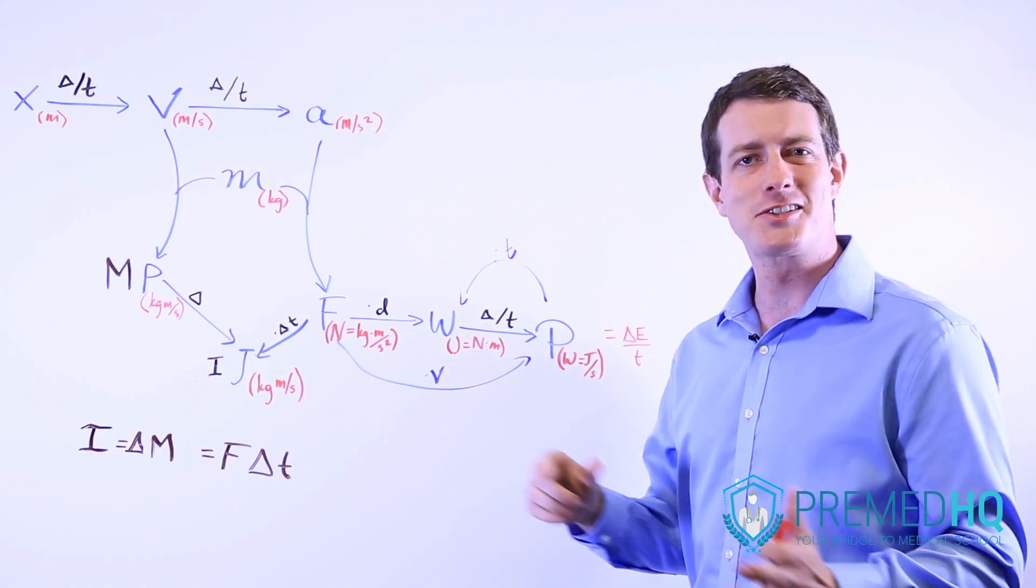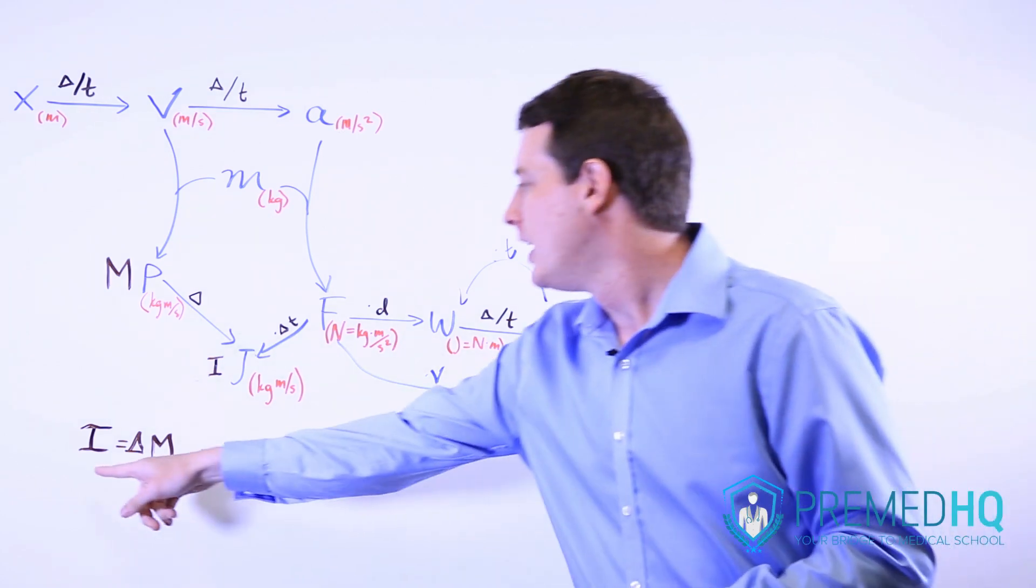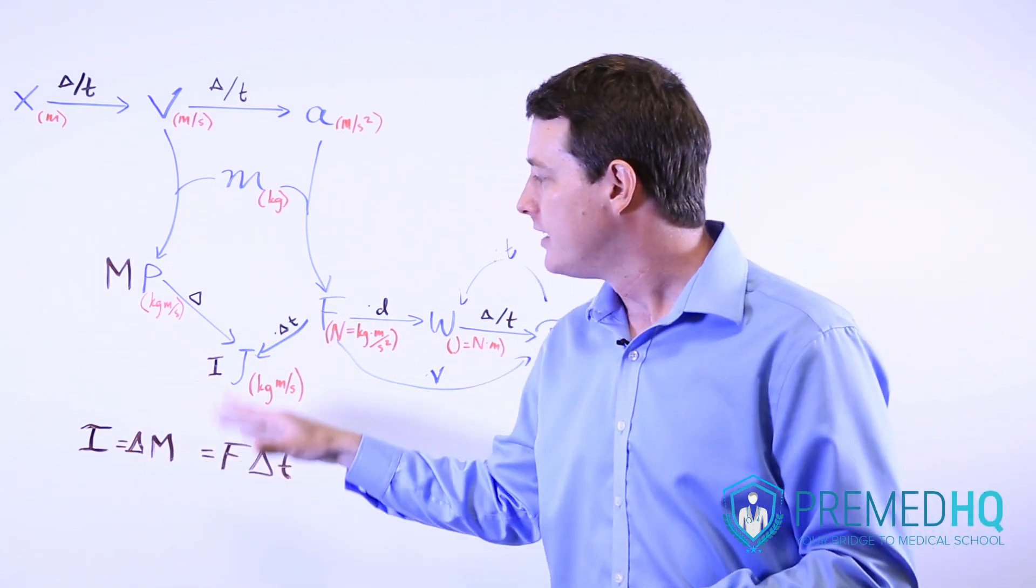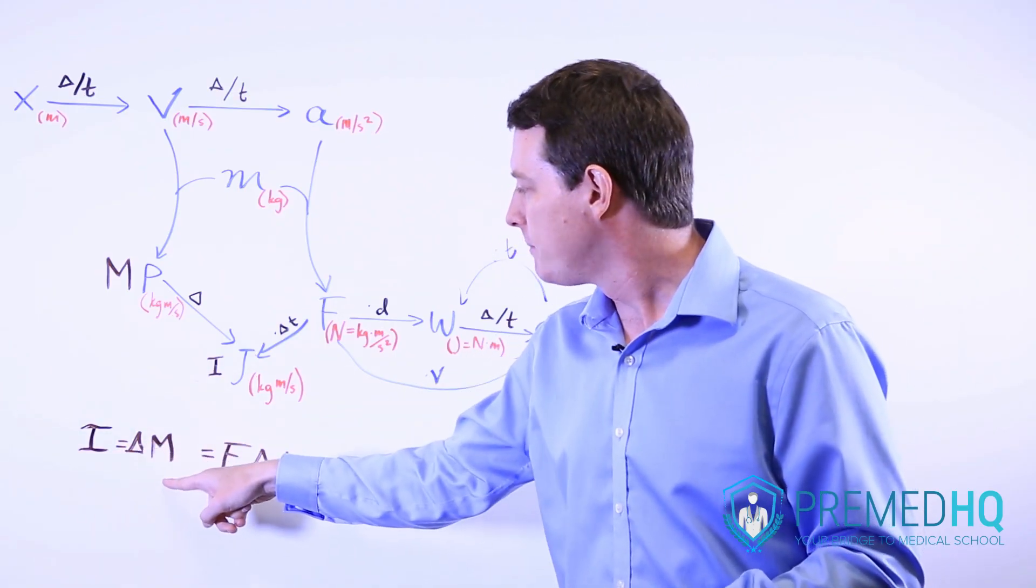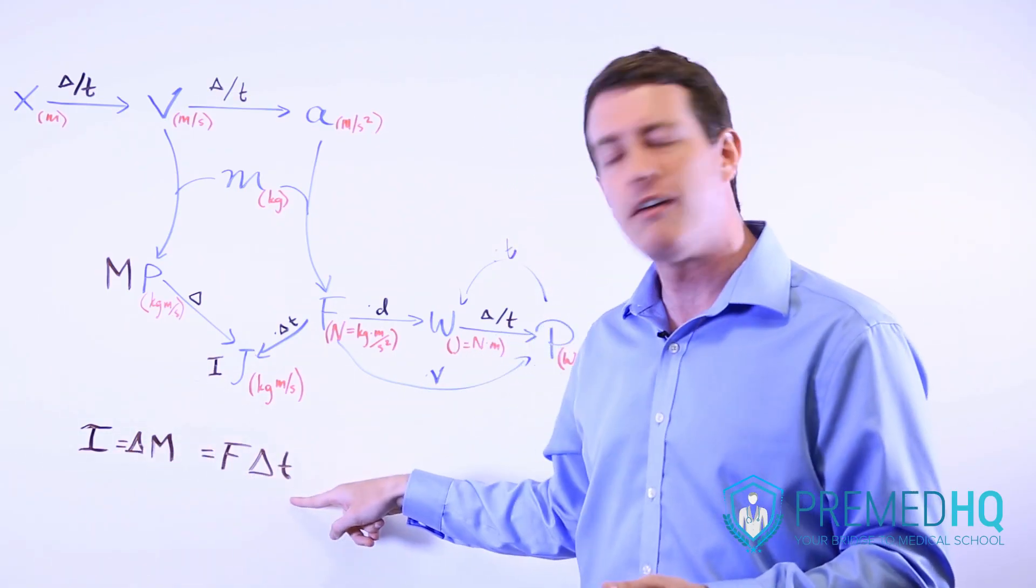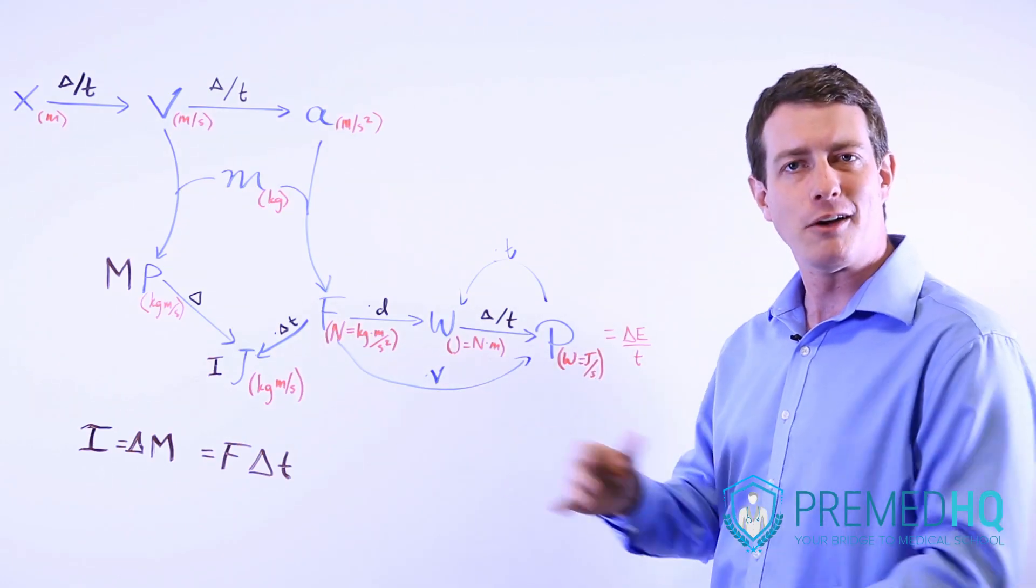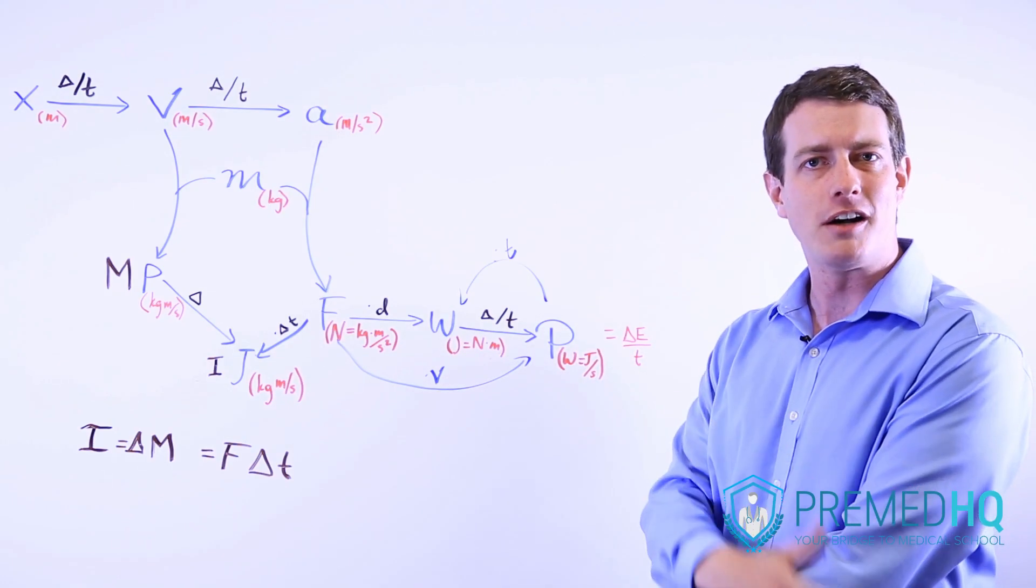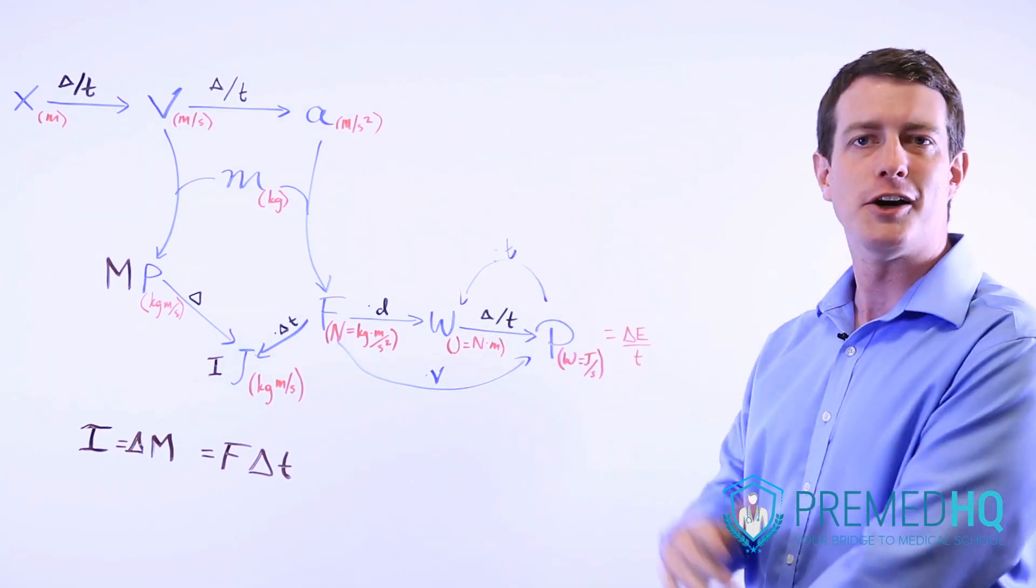And then this makes it really easy to remember the impulse formulas. Just think of an impulse eater, someone who eats on impulse. Eventually they'll end up saying, I am fat. And that gives you the impulse formulas there. I equals delta M and also equals F delta T. And that's a really straightforward way to remember the impulse formulas if those are causing you trouble. And that should now enable you to be able to produce this entire chart from memory.